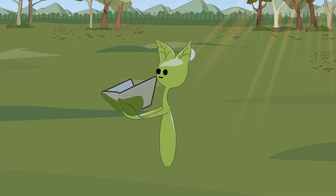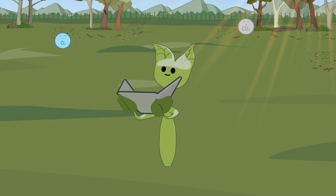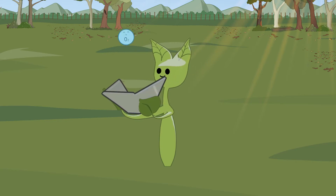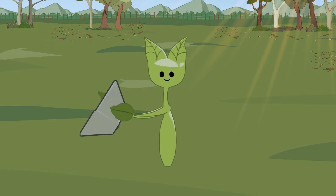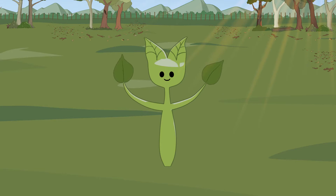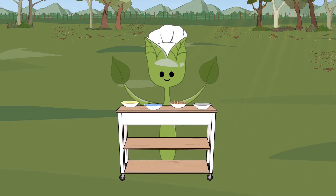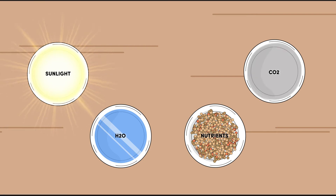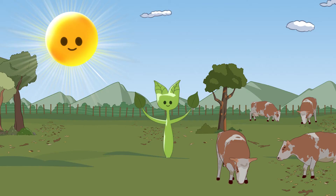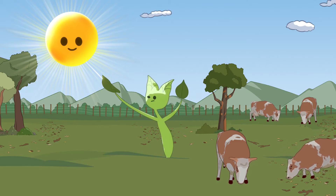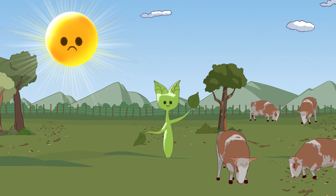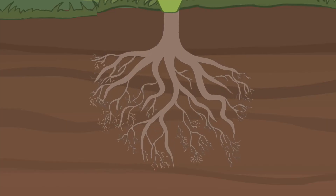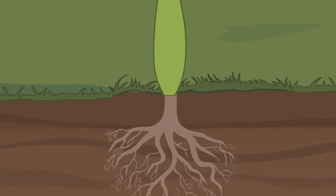There is a key process that plants do that we rely on. Plants photosynthesize, which means they store carbon and provide oxygen for most living things. Plants need four ingredients to photosynthesize: sunlight, water, nutrients and carbon dioxide. We know that plants get the sunlight they need from the sun and the carbon dioxide from the air, but where do the nutrients and the water come from?